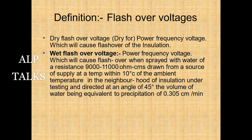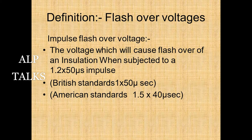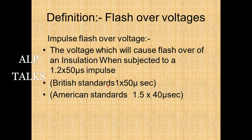Impulse flashover voltage is the voltage which will cause flashover of an insulation when subjected to a 1.2/50 microsecond impulse wave — that is the tail and peak duration. The British Standard specifies 1.2/50 microseconds and the American Standard 1.5/40 microseconds, but generally 1.2/50 is the accepted standard.